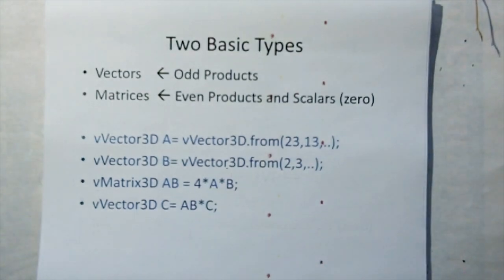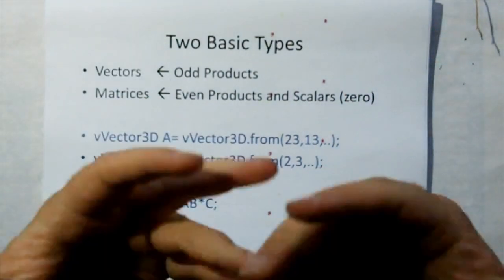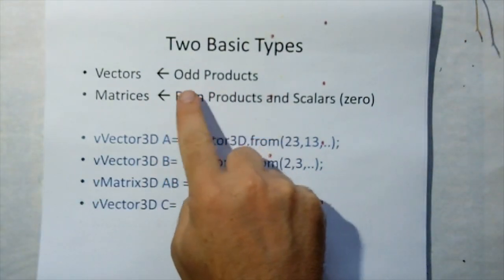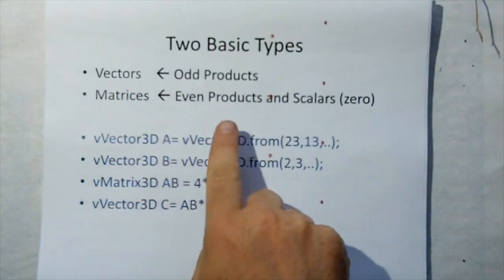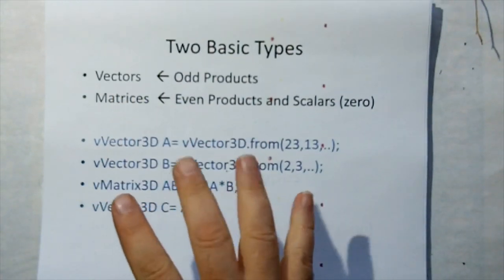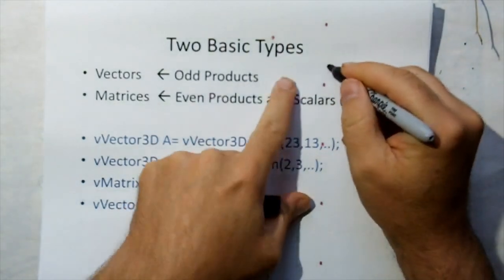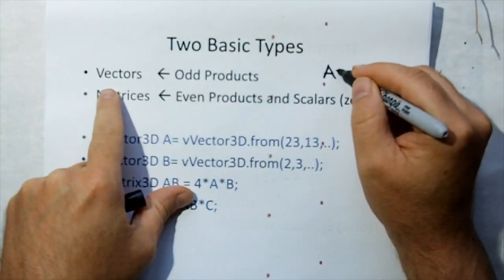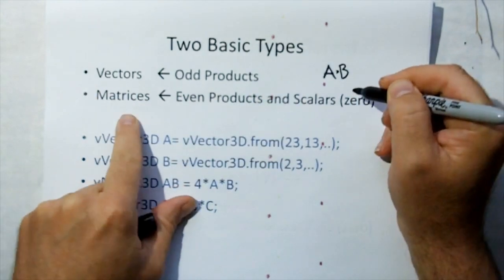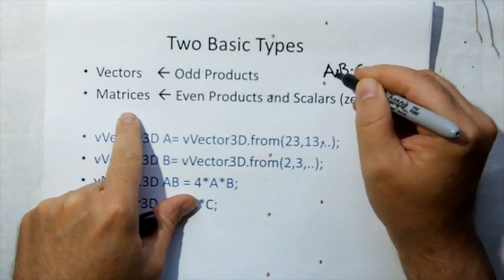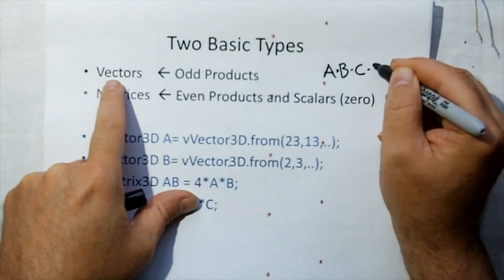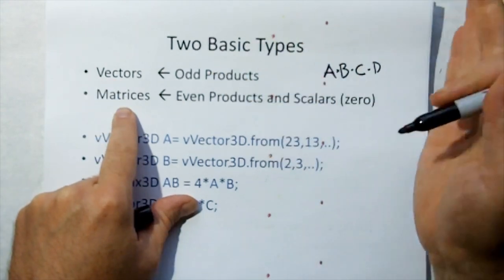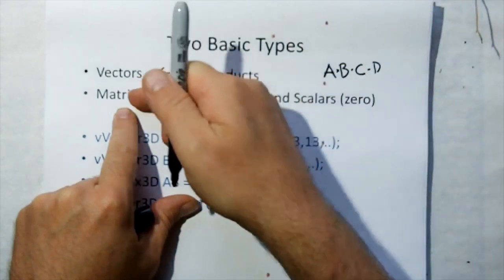There are two basic types — variable types. You have odd products, which are vectors, and even products, which are matrices. If you have one vector, that's an odd product — a vector. Multiply two vectors together, that's an even product — it becomes a matrix. Multiply a third vector and the result is a vector again. A fourth gives a matrix. The zero product, which is no vector, is a scalar, and scalars exist as matrices only.